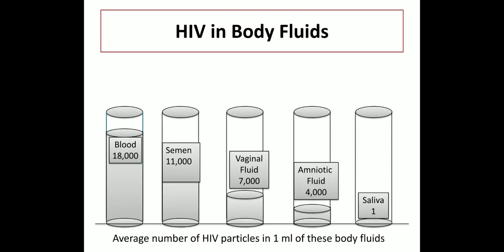We need to understand the body fluids which are at maximum risk of transmitting this infection. Blood and semen are the two most common body fluids containing a lot of viral load. The viral particles in vaginal and amniotic fluid are much lower. Saliva contains inhibitory substances which keep the viral load to a minimum, which is why casual contact or kissing does not transmit this virus.